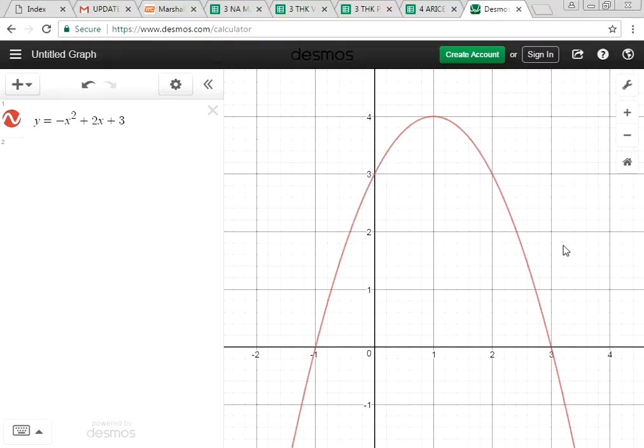What is the maximum or minimum point? Maximum. What are the coordinates? 1, 4. Number of points of intersection with the x-axis? Two times. And it intersects the y-axis one time only.